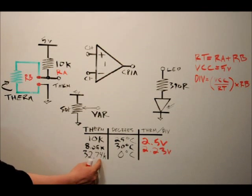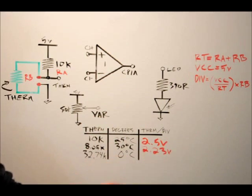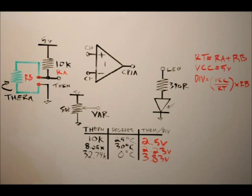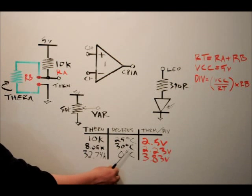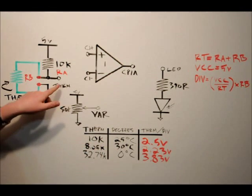For our last example at zero degrees, the freezing point, the thermistor reads 32.74k ohms. RT is 32,740 plus 10,000, which is 42,740 ohms. Five volts divided by 42,740, multiplied by RB of 32,740, equals 3.83 volts. So from just these three examples, we can see: at freezing we have 3.83V, at 25°C we have 2.5V, and at 30°C we have 2.23V. The higher the temperature, the lower the voltage at the THRM line.